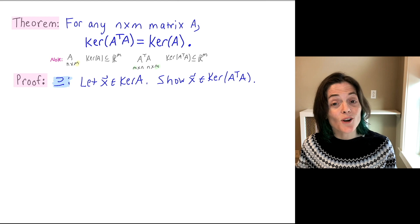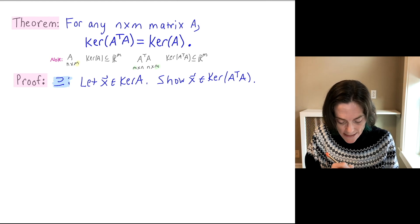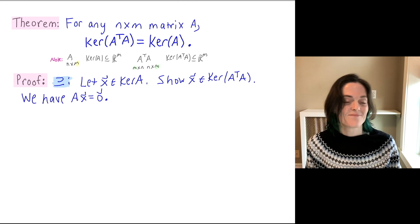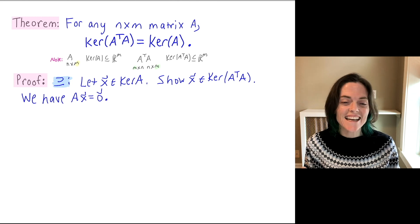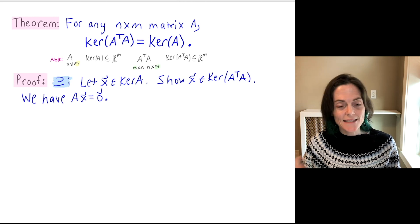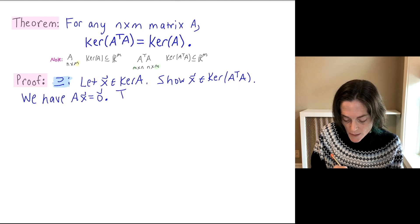x is in the kernel of A. This means that Ax equals zero. All right, all I need to do to get x in the kernel of A transpose A is just multiply both sides of this equation by A transpose.